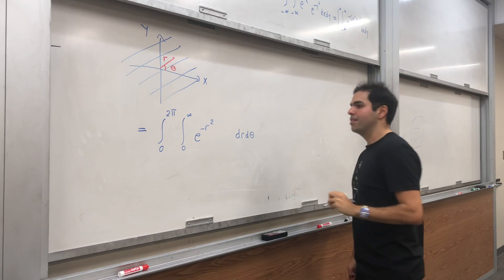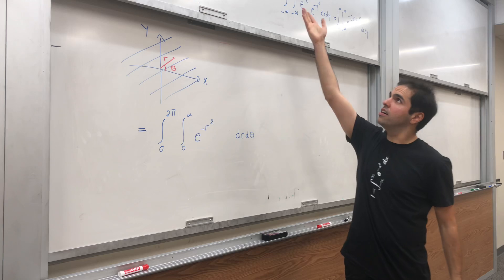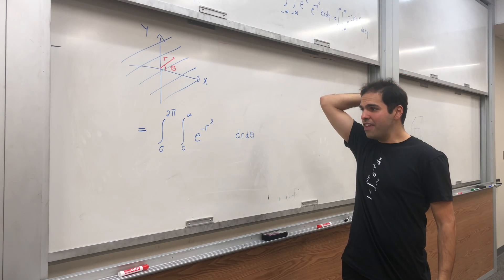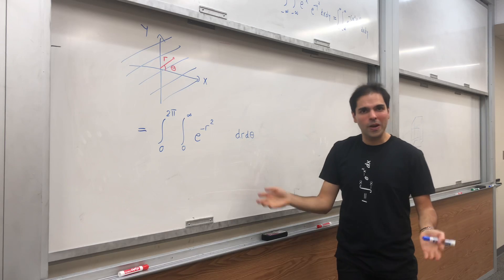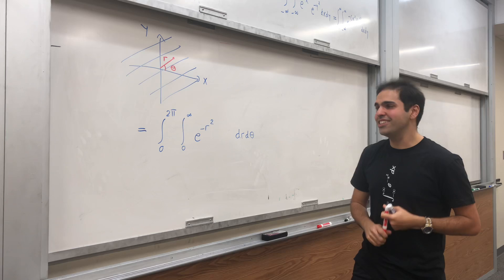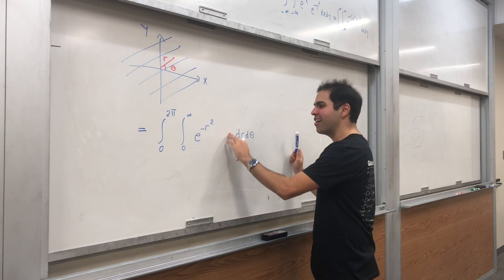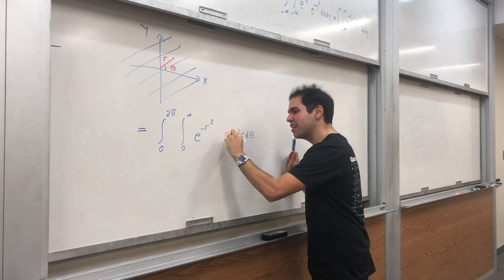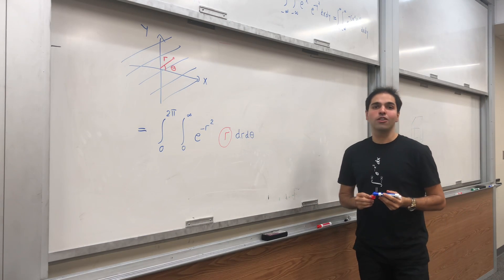Now at this point it looks like a lost cause because we have the integral e^(-x²), we turned it into e^(-r²), which seems impossible. So it seems we haven't done any simplification. But lo and behold, there's something that we forgot that's super important: if you use polar coordinates, you have an extra factor of r.